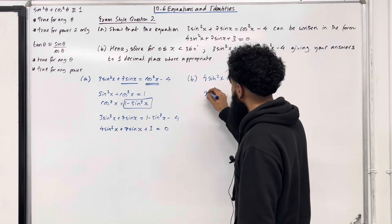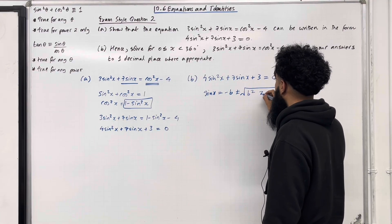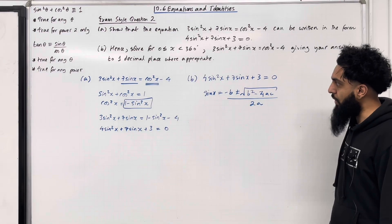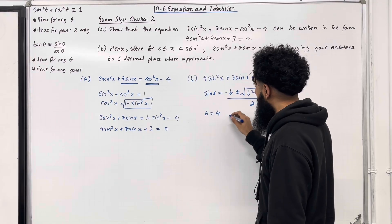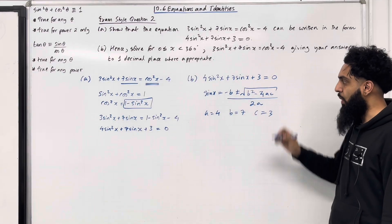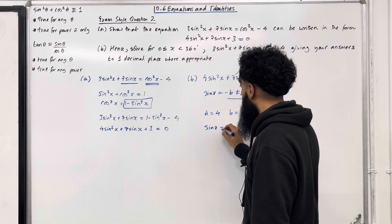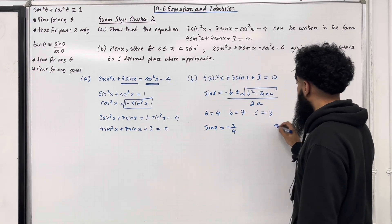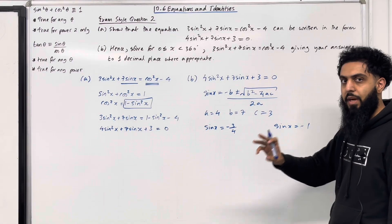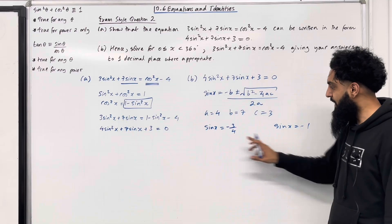So sin x = (−b ± √(b² − 4ac)) / 2a, where a = 4, b = 7, c = 3. Substituting gives two solutions: sin x = −3/4 and sin x = −1. Now −3/4 is between −1 and 1, and −1 is within that interval, so both equations have solutions.